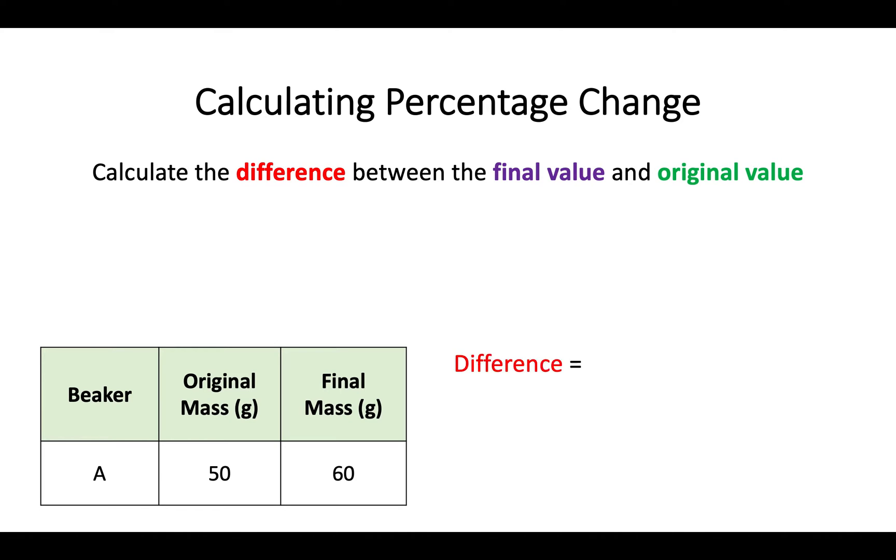So to start off with, in this example the difference for beaker A would be that the final mass was 60 grams but the original mass was 50 grams. So 60 take away 50 gives us a difference of 10. Nice and easy to start with. So the main thing we're looking for just to start off calculating percentage change is what is the difference between these two numbers.